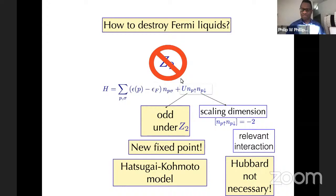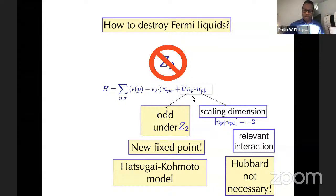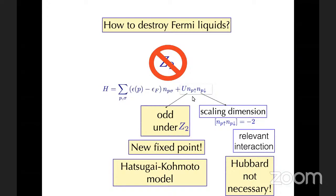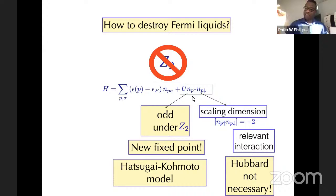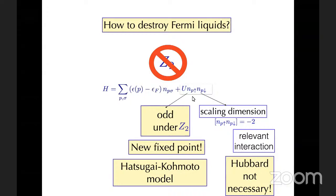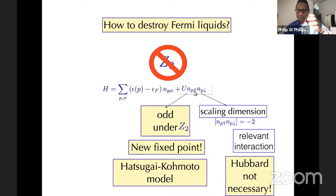There is a further clarification: O(4) differs from SO(4) by just having inversion — it's a reflection, that's the Z2. With this U term, you are breaking inversion because n_{k↑} → −n_{k↑} is no longer a symmetry of this Hamiltonian.